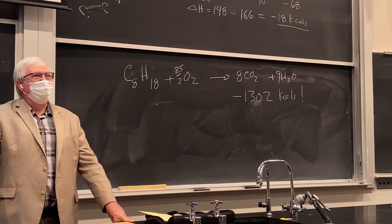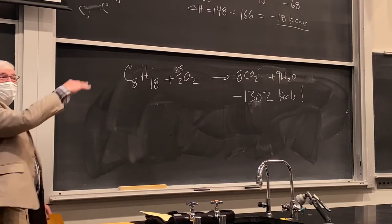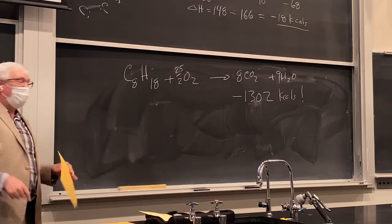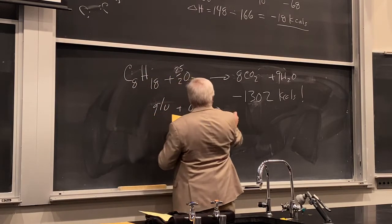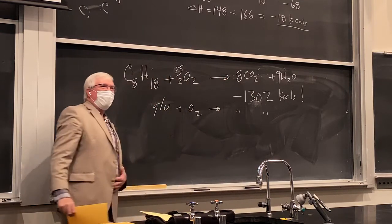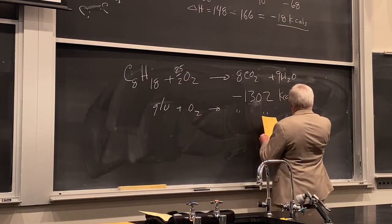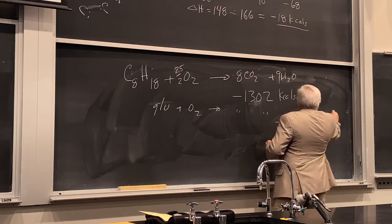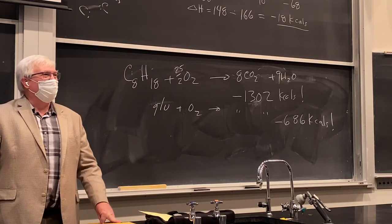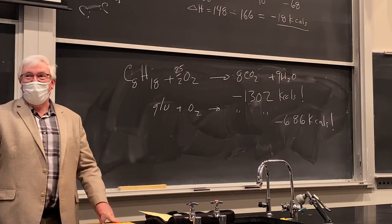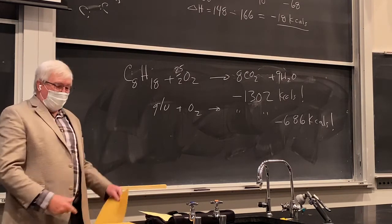What about glucose plus oxygen going to CO₂ and water — that's glycolysis or metabolism, going on inside your body. How much energy? Minus 686 kcal. That's a tremendous amount of energy. Blood sugar (glucose) has been chosen by nature to supply energy to every living cell — it makes ATP so your muscles can move. That reaction is well-characterized, and we know those numbers.